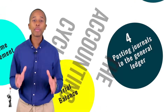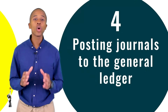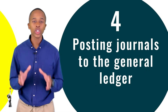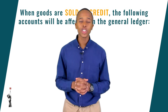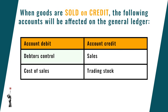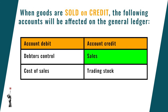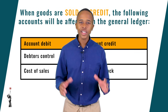Step four of the accounting cycle is posting the journals into the general ledger. When goods are sold on credit, the following accounts will be affected on the general ledger: number one, debtors control will debit as well as cost of sales; number two, sales will credit; and lastly, trading stock will also credit.